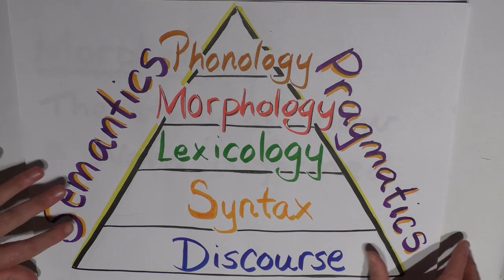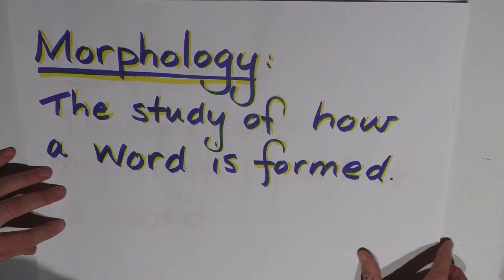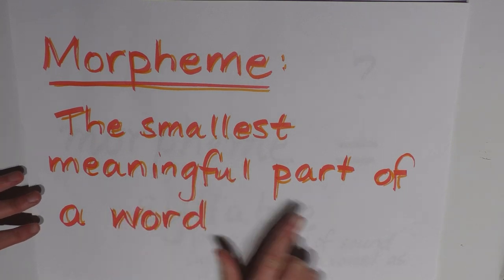Morphology is the study of how a word is formed, how it's put together. By breaking words down into their meaningful parts, we can see how they piece together to make greater meaning. The smallest meaningful part of a word is called the morpheme — the smallest meaningful part of a word.